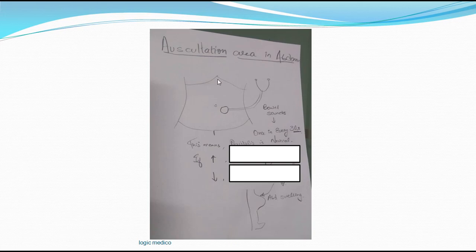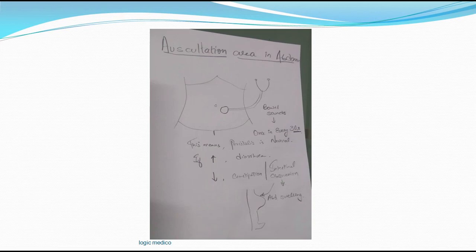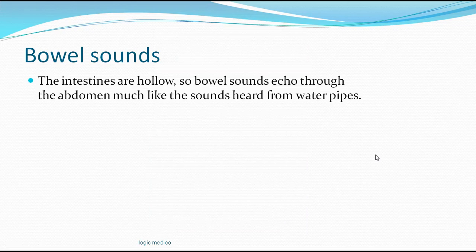Normal bowel sounds mean there is no obstruction or perforation in the bowel and the GIT is normal. If bowel sounds are increased, diarrhea is present. If decreased, think of constipation. If absent, consider intestinal obstruction — the patient will also have abdominal swelling, projectile vomiting, and other findings of intestinal obstruction, which can rupture and cause peritonitis.